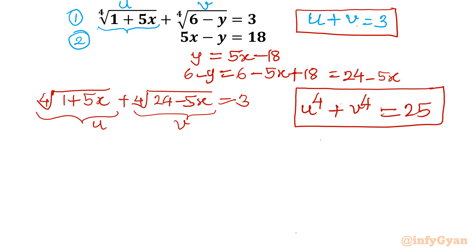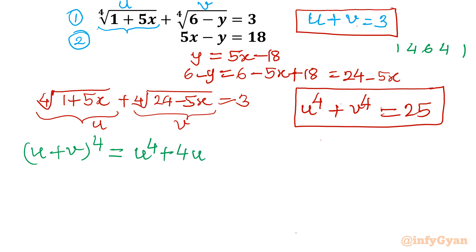Now we have two equations and we need to find u and v first. Let me expand (u + v) to the power 4. Applying Pascal's triangle or binomial expansion directly, the coefficients for power 4 are 1, 4, 6, 4, 1. So the expansion gives: u⁴ + 4u³v + 6u²v² + 4uv³ + v⁴.